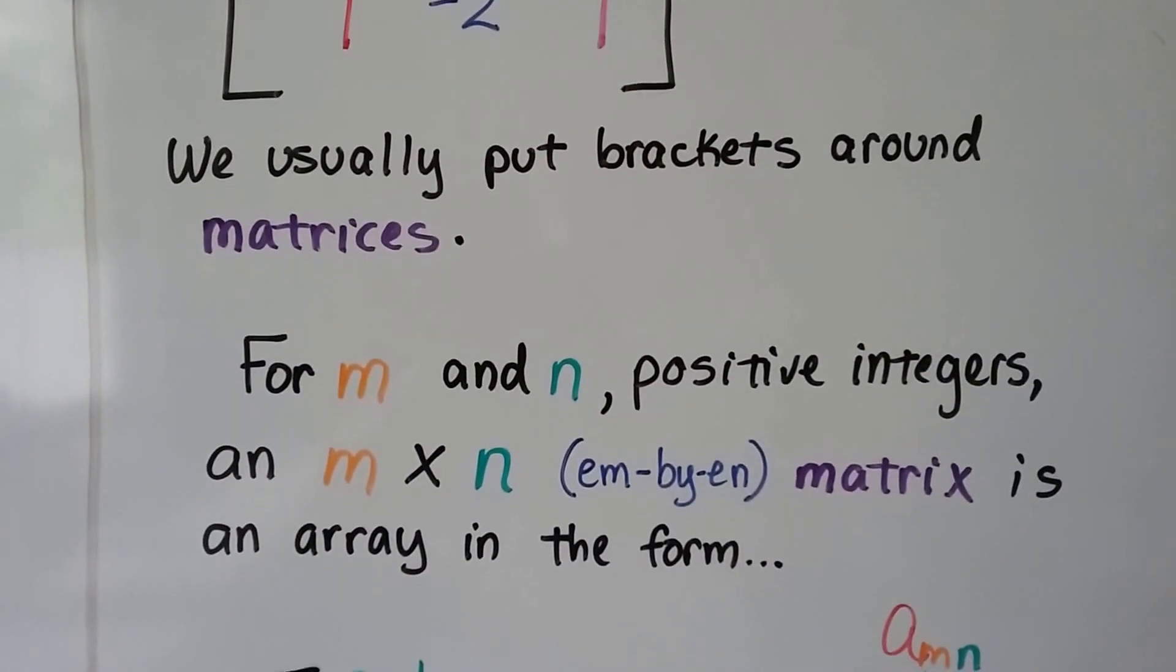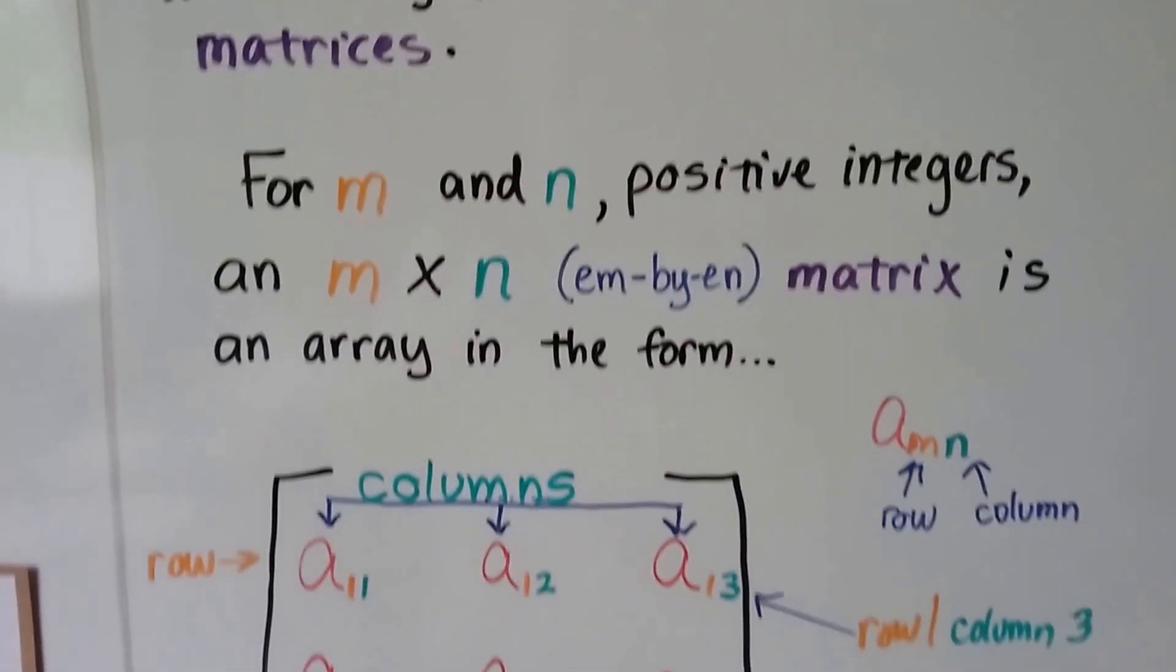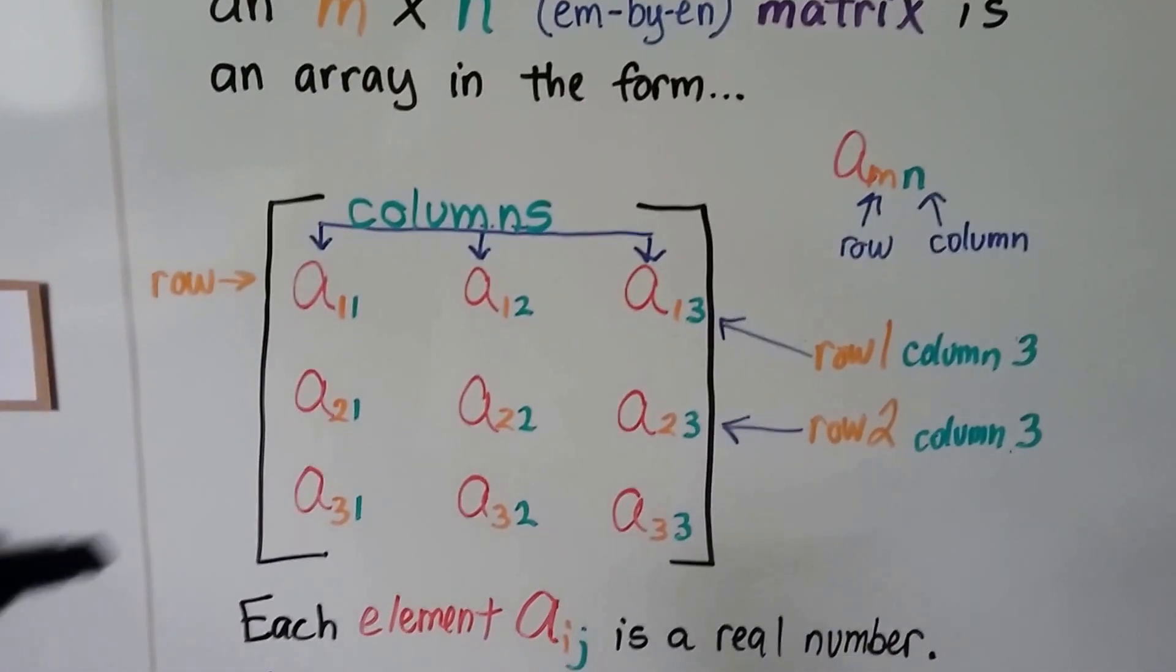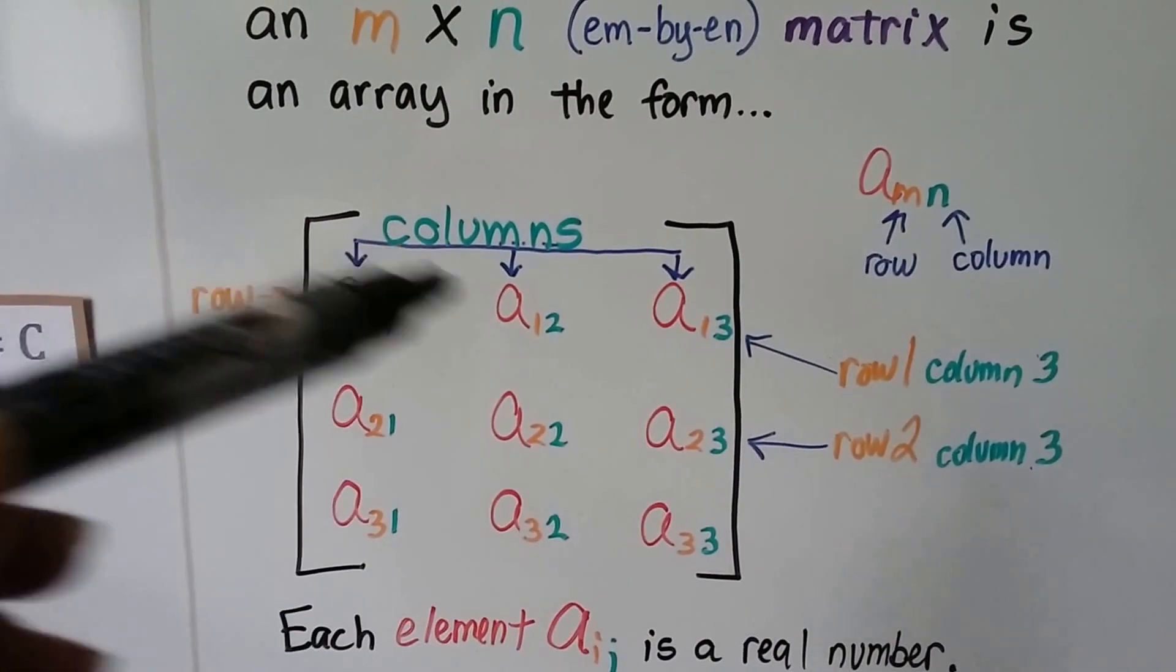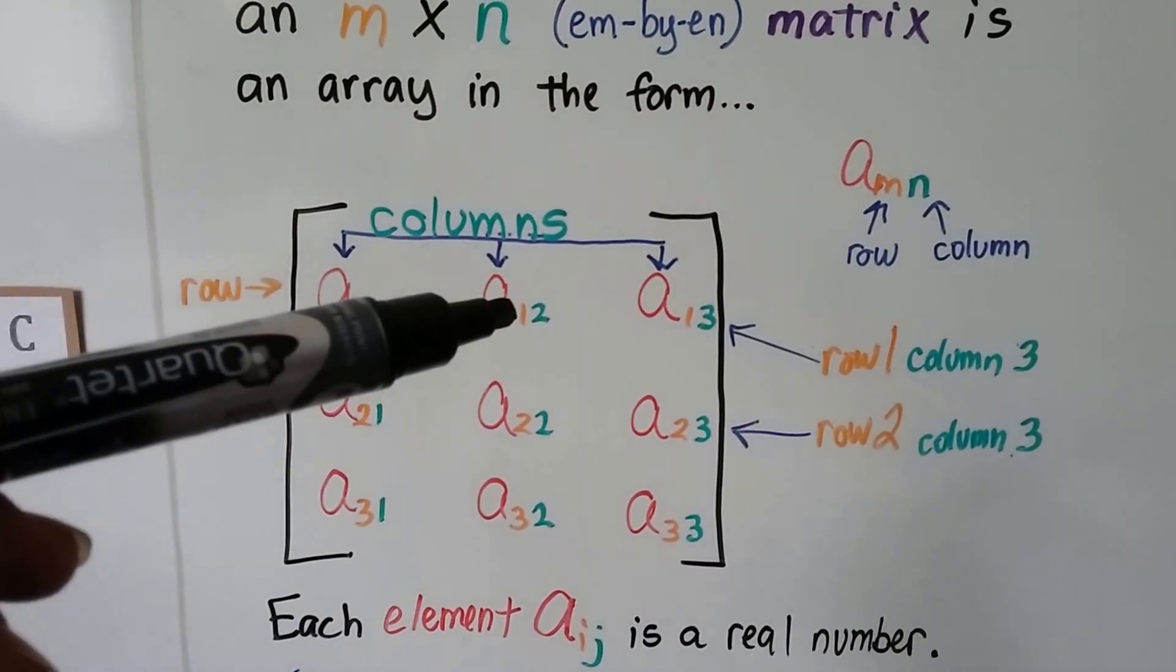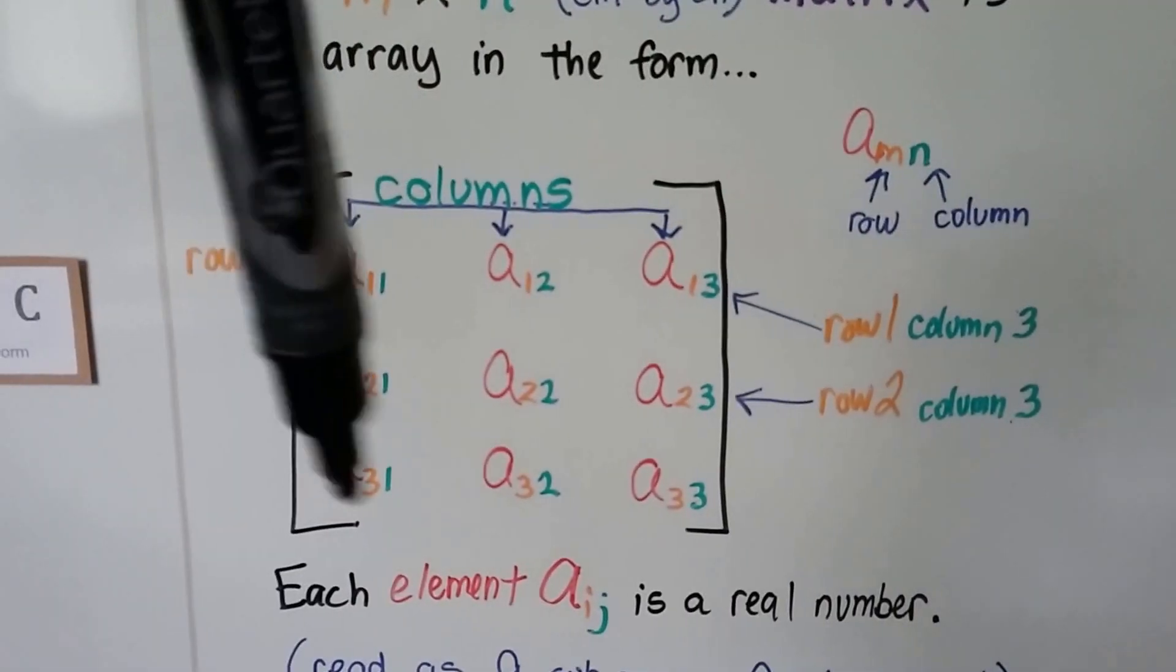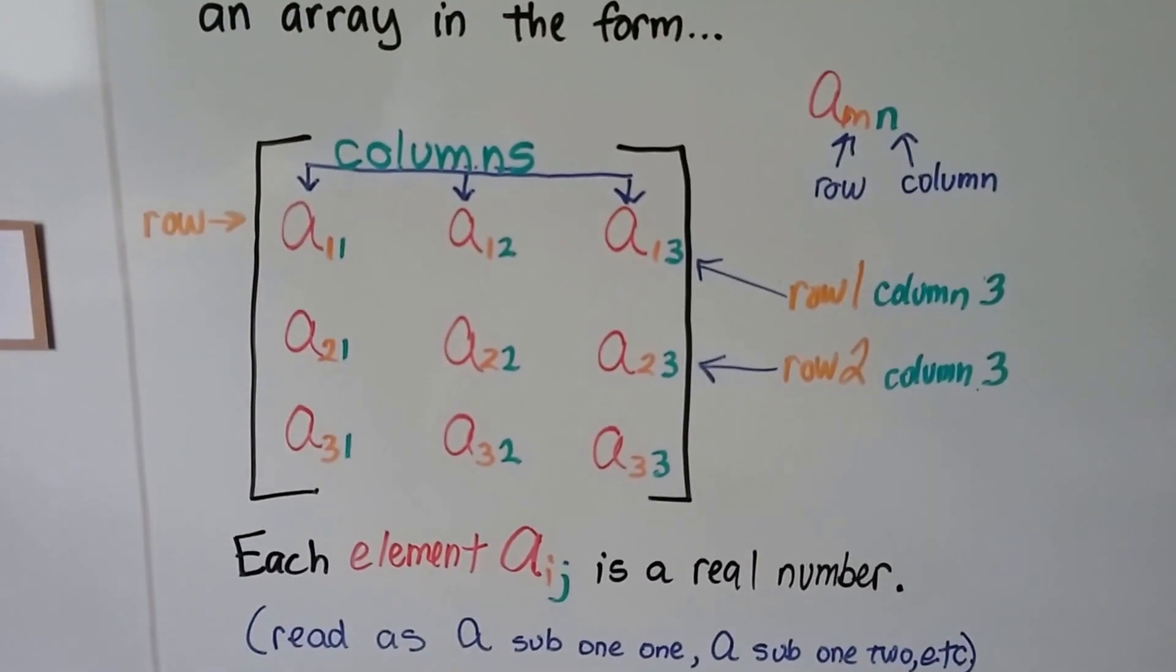For m and n positive integers, an m by n matrix is an array in this form. If we've got our number and then little subscript numbers down here and down here, that's the row, that's the column. If a is the element of the matrix, the number that's in the matrix, then this would be the first row, first column, first row, second column, first row, third column. We've got 1, 2, 3 rows and 1, 2, 3 columns. This is actually a square matrix because it has just as many rows as columns.